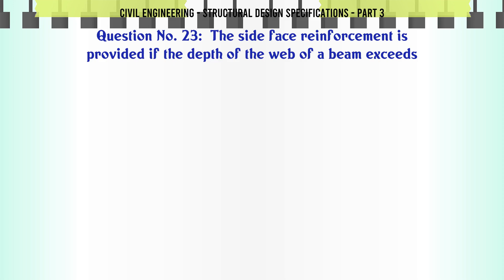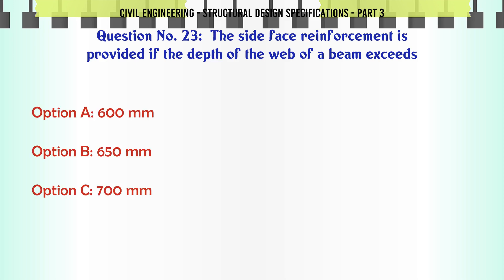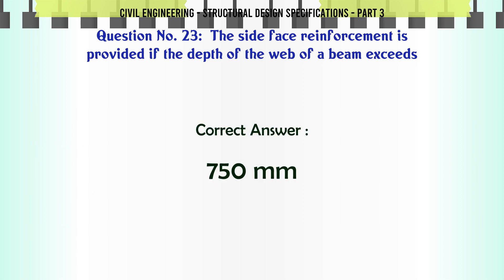The side face reinforcement is provided if the depth of the web of a beam exceeds: a. 600 mm, b. 650 mm, c. 700 mm, d. 750 mm. The correct answer is: 750 mm.